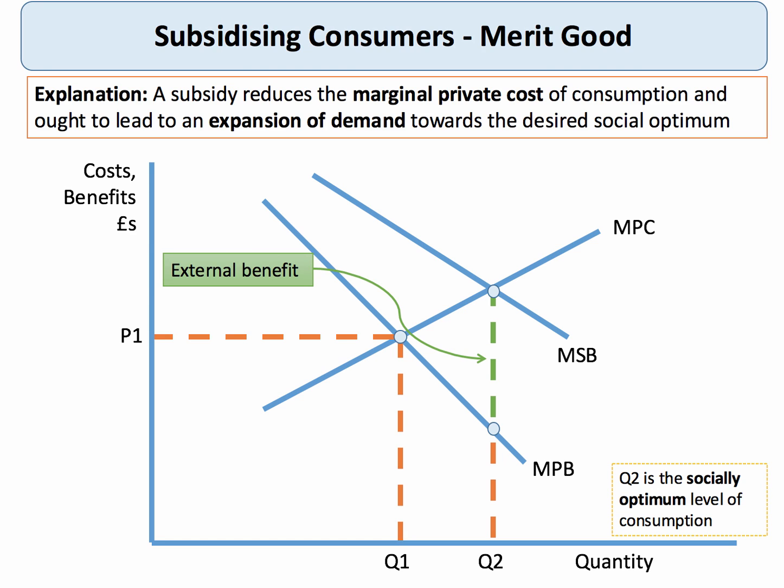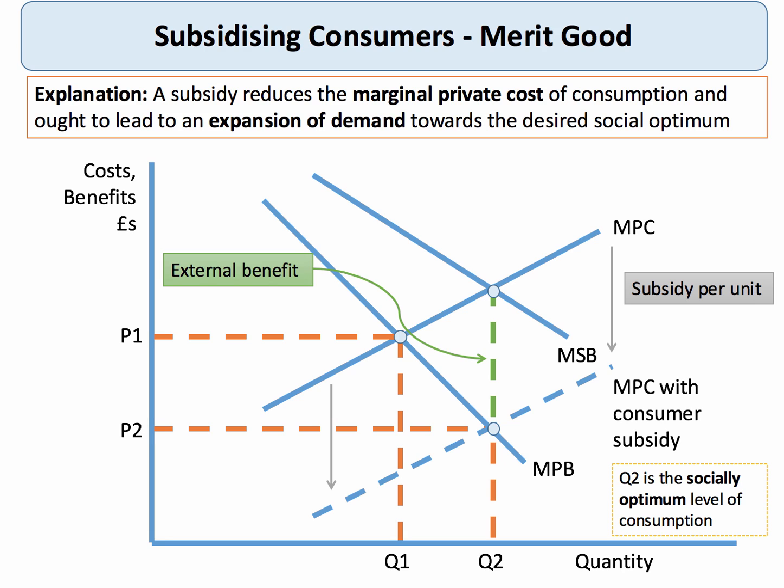So what can we do to encourage people to consume more merit goods? The obvious approach is to offer a subsidy. We know that Q2 is the optimum level of consumption from society's point of view, and at Q2 the external benefit is the vertical distance between the MPB and the MSB curve. To get consumption to expand to Q2, we need to move down the consumer's demand curve — we need to get the price down to P2. A direct subsidy to the consumer would reduce the private cost of consumption, with the extent of the subsidy shown by the vertical distance between the two marginal private cost curves.